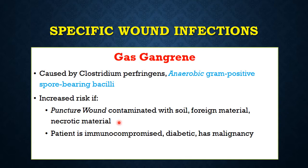Once Clostridium perfringens is deposited in the depths of a puncture wound, the wound may close or soft tissues may oppose with swelling, creating an anaerobic environment where the clostridia can proliferate. If the patient is immunocompromised, diabetic, or has a malignancy — where host defenses are low — the chances of bacterial growth are greater.